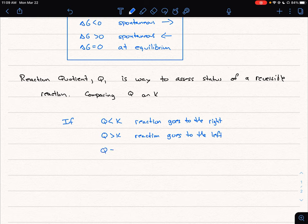And finally, we said, if Q is equal to K, then we're at equilibrium, and there's no movement, no net movement that we can see.